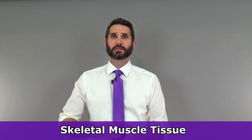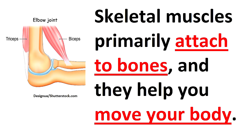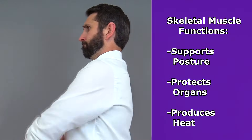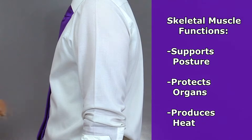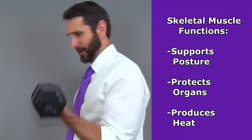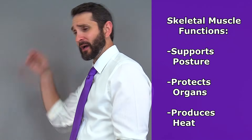First let's talk about skeletal muscle tissue. Skeletal muscles most commonly attach to bones and they help you move your body. Unlike the other two types of muscle tissue, skeletal muscles contract on a voluntary basis via the somatic nervous system, allowing you to move your body at will. Skeletal muscles also serve important functions such as supporting your posture, protecting delicate organs, and they even produce heat during contraction which helps the body maintain a proper temperature.